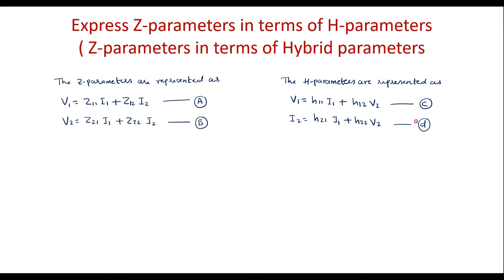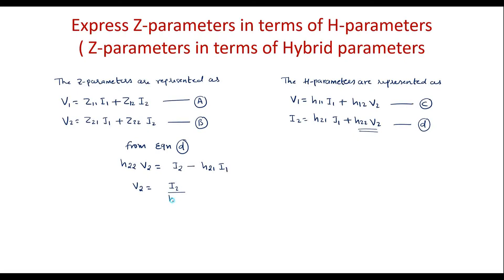We will try to represent equations C and D in the same form as equations A and B. From equation D, I can write H22·V2 is equal to I2 minus H21·I1, or V2 is equal to I2 divided by H22 minus H21 by H22 times I1. That is, V2 is equal to minus (H21/H22)·I1 plus (1/H22)·I2. I will call this equation 1.